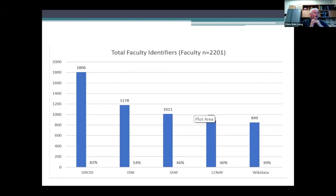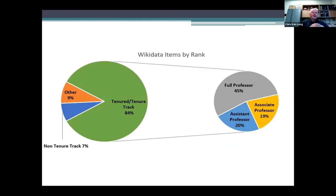Let's look at some preliminary findings. This slide shows the total number of the five identifiers for all faculty. ORCID is by far the highest number, which can be attributed to our campus's persistent evangelism to faculty about having an ORCID. Wikidata is at the bottom, just a little under 40 percent — a clear indication that there's still a lot of work to be done. Looking specifically at Wikidata by academic rank, not surprisingly, the faculty with the highest research expectations — tenured and tenure-track faculty — have the largest percentage of Wikidata items, with full professors comprising the largest cohort.